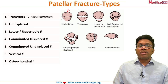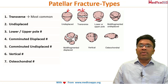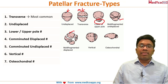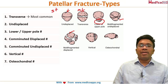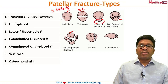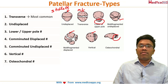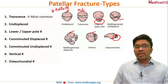Transverse undisplaced is most common. Lower pole fractures involve the broken piece going with the patellar tendon. Multi-fragmented undisplaced and multi-fragmented displaced fractures also occur — the multi-fragmented type is sometimes called a stellate fracture. There is also a vertical fracture, which is relatively rare, and an osteochondral fracture where a piece of cartilage and bone are broken together.